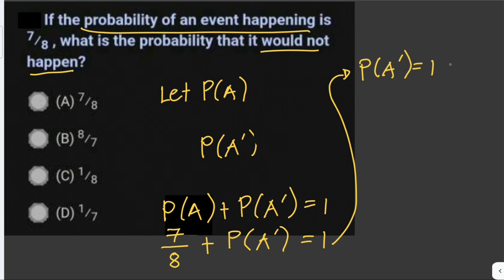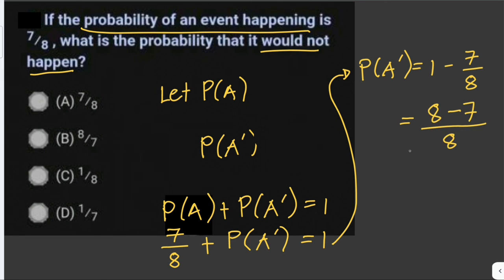The probability it would not happen equals 1 minus 7 over 8. To subtract a fraction from a whole number, we find the LCD, which is 8. So we get 8 over 8 minus 7 over 8, which equals 1 over 8. Therefore the probability that the event would not happen is 1 over 8, and the answer is letter C.